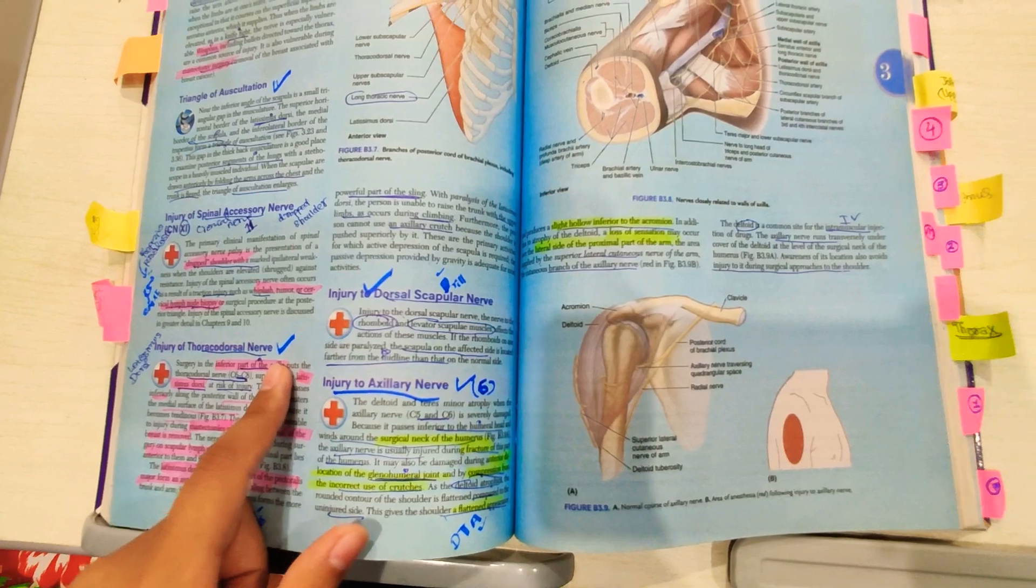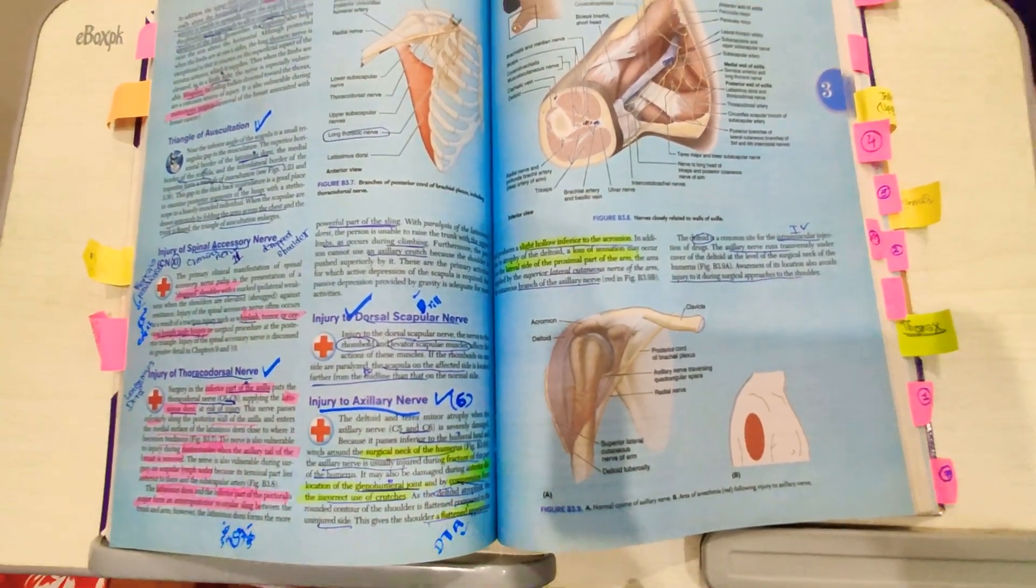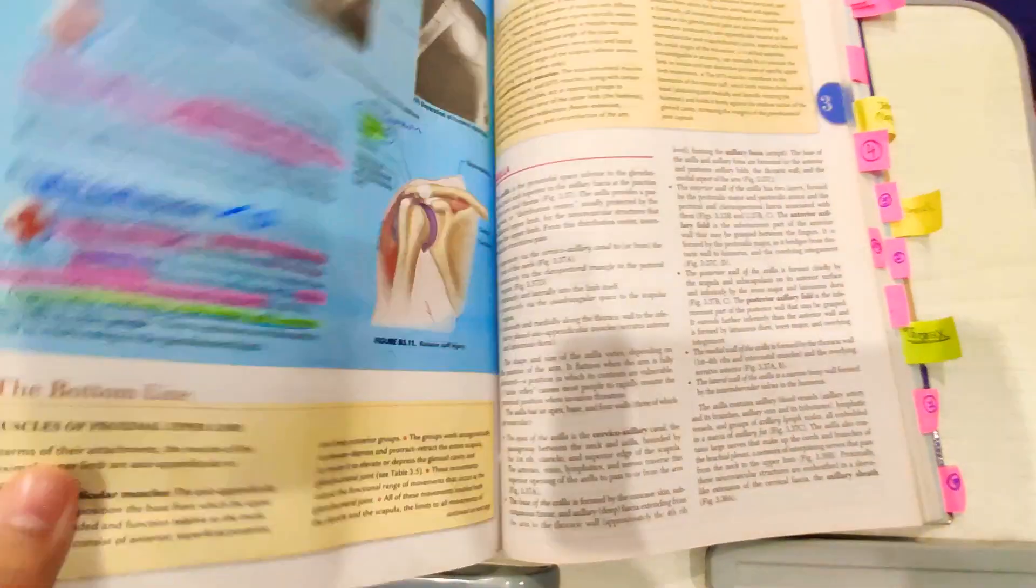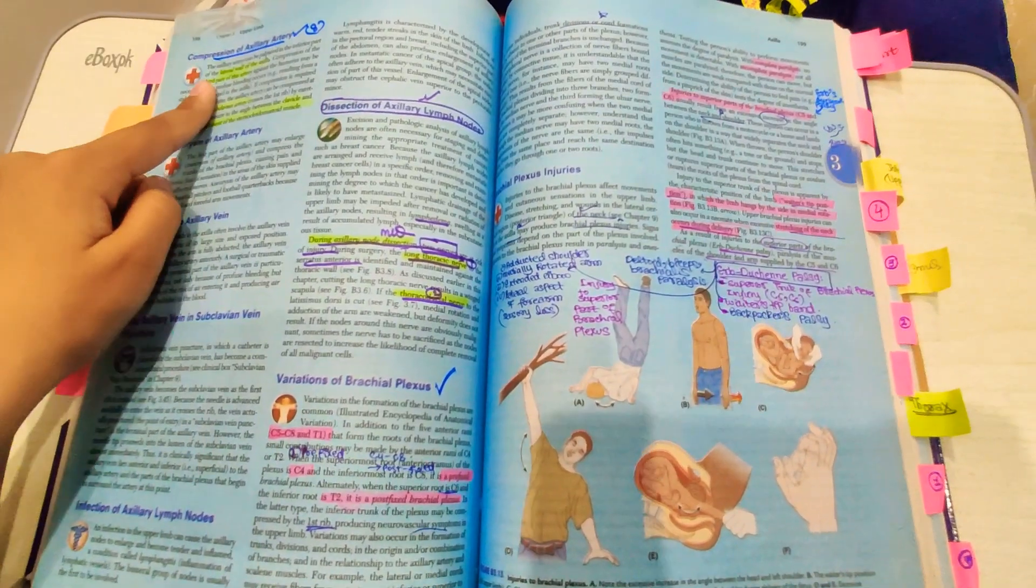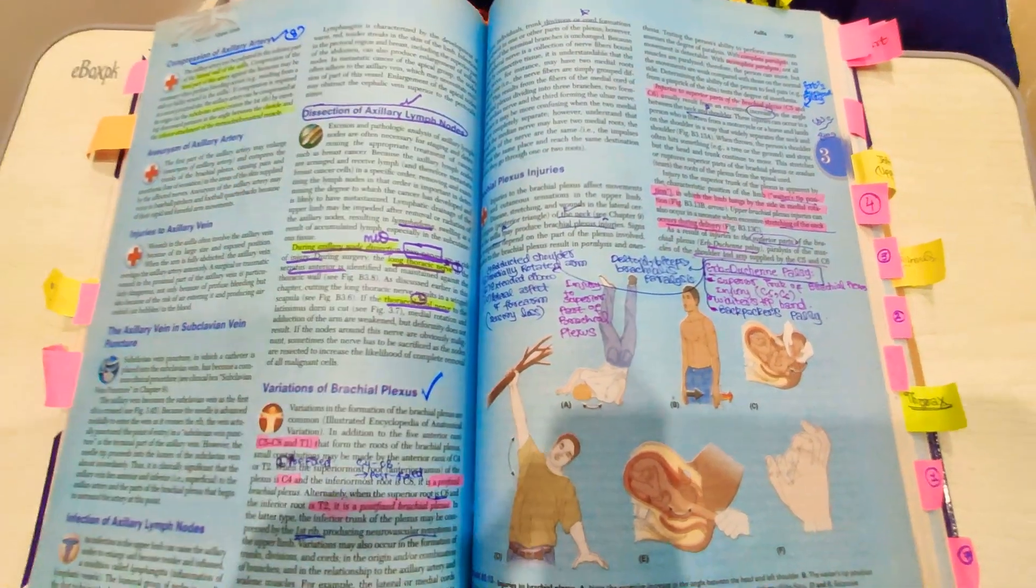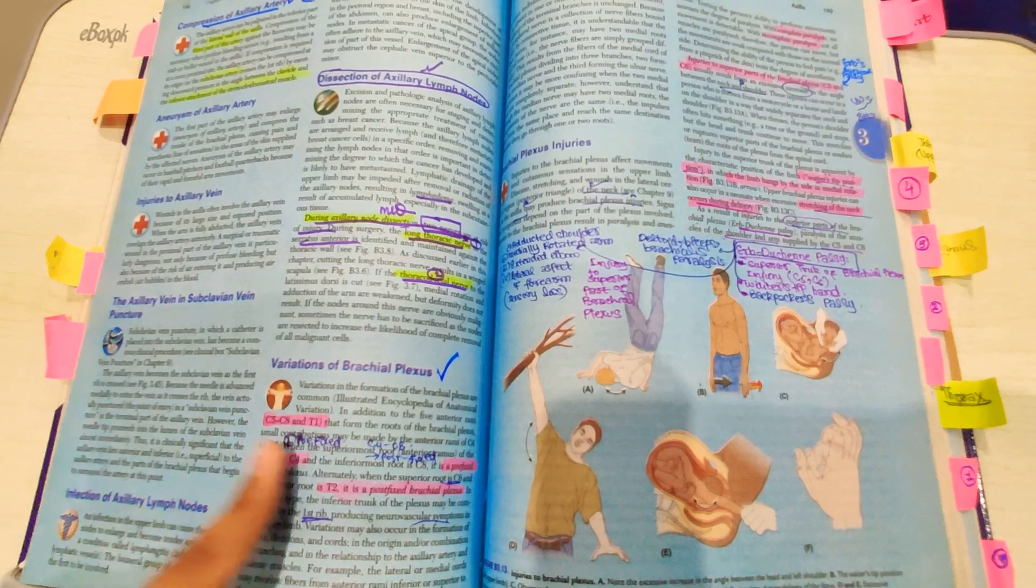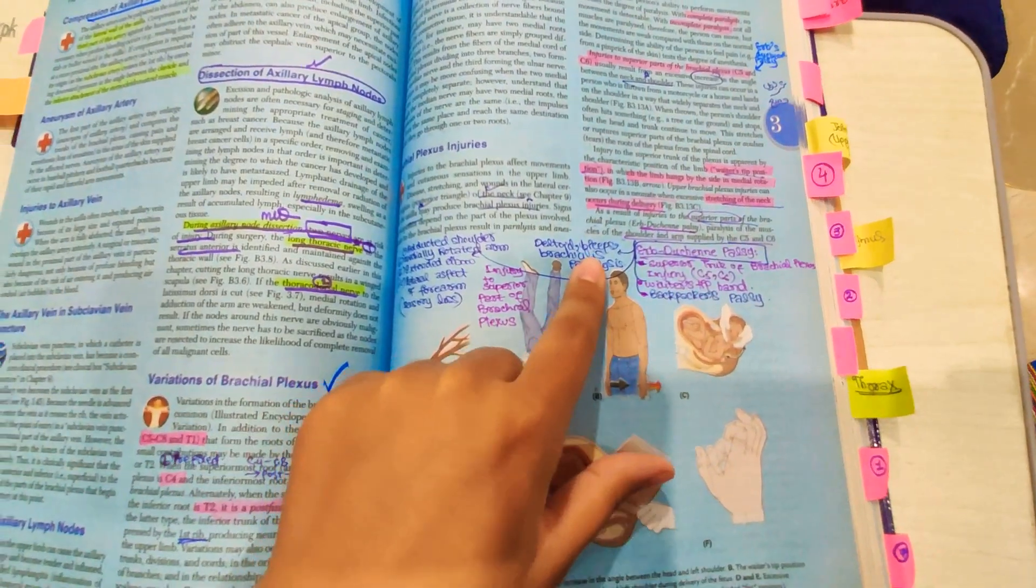Injury to dorsal scapular nerve, injury to axillary nerve, and then rotator cuff injuries. Then you have to do compression of axillary artery, then dissection of axillary lymph nodes, then variation of brachial plexus, then Erb's palsy.